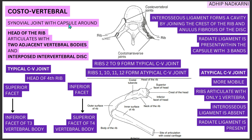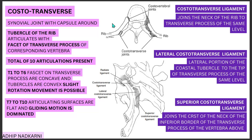Moving on to the costotransverse joint: the transverse process of the vertebral body articulates with the rib here. It is a synovial joint with a capsule around it. The articulation occurs between the tubercle of the rib and the facet present on the transverse process of the corresponding vertebra.